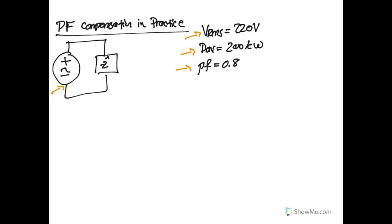The question is: how big of a capacitor do we need to insert into the system to make our power factor more efficient and raise it to 0.95?